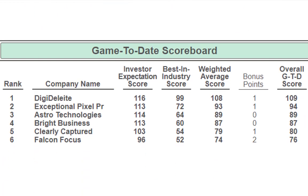Scrolling down to the game-to-date scoreboard, Company D is still at the top with a game-to-date overall score of 109. Team E is right behind at 94, then A at 89, B at 87, Team C at 81, and F at 76. But that doesn't really depict a true picture of Team F, because they should be at least in the middle of the pack right now. We're starting fresh this week, so we'll see what happens.